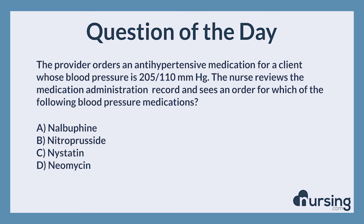The correct answer is B, Nitropresside. This is an antihypertensive medication used during a hypertensive crisis. Are you looking for the best NCLEX question bank on the planet with the most detailed rationales?